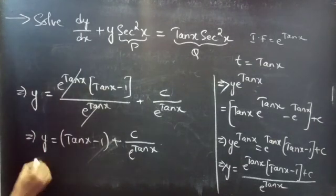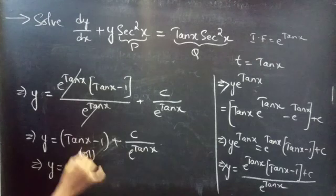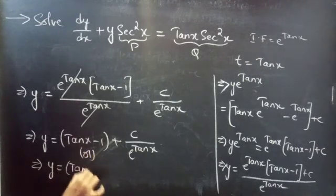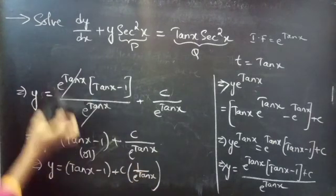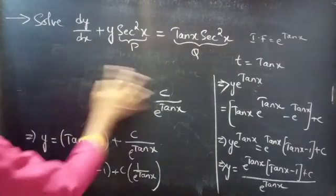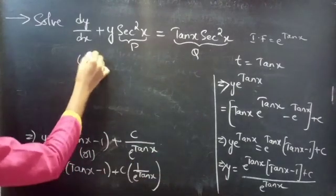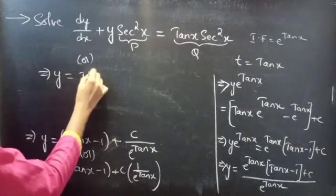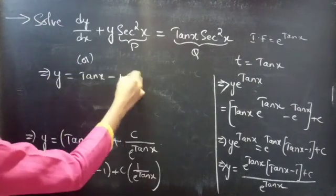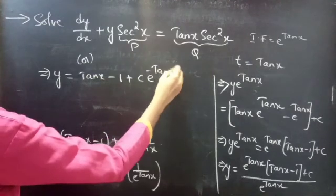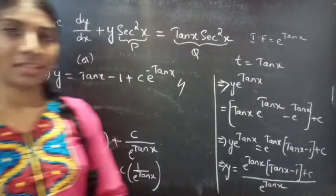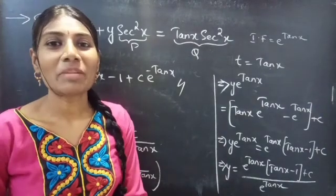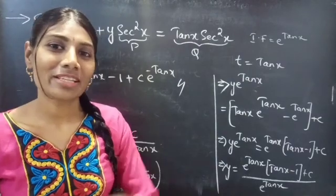We can write 1/e^(tan x) as e^(−tan x), so the final answer is y equals tan x minus 1 plus c·e^(−tan x). This completes the problem. We have seen a problem from linear equations in this video. Hope you'll understand. We'll see you in the next video — until then, bye bye.